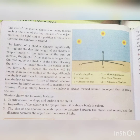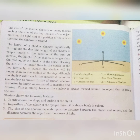The size of the shadow depends on many factors such as the time of the day, the size of the object blocking the light, and the position of the sun at that time. Chhaya ka aakaar kai karakon par nirbhar karta hai. The length of a shadow changes significantly during the day — shadow ki length din bhar mein kaafi badal jaati hai — aur sun ke anuroop shadow ki length change hoti hai.